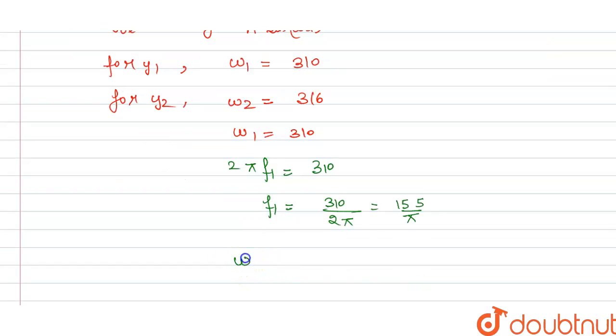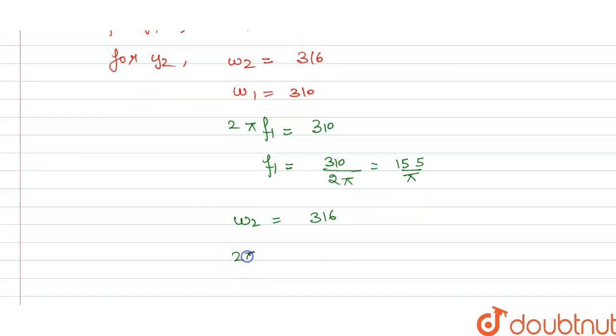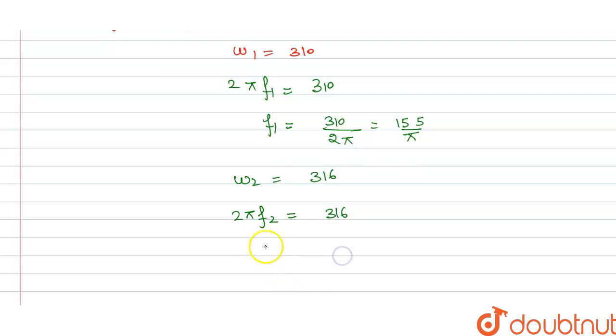Similarly, for omega 2, angular frequency 2 is 316 and this equals 2π f2, which is 316. We have frequency 2 is 316 divided by 2π, so this equals 158 divided by π.